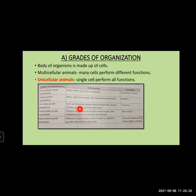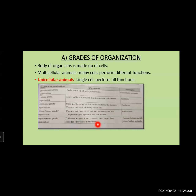Next is cell-tissue grade organization — cells performing similar functions form tissues, and then tissues perform all body functions. Phylum Cnidaria is included in cell-tissue grade. Next is tissue-organ grade organization — tissues are organized to form some organs, but organ system is not formed. Example: flatworms. And last is organ-system grade organization — different organs form different organ systems that perform specific functions in the body. Human beings and all other higher animals are included in this. These were the five different types of grades of organization.